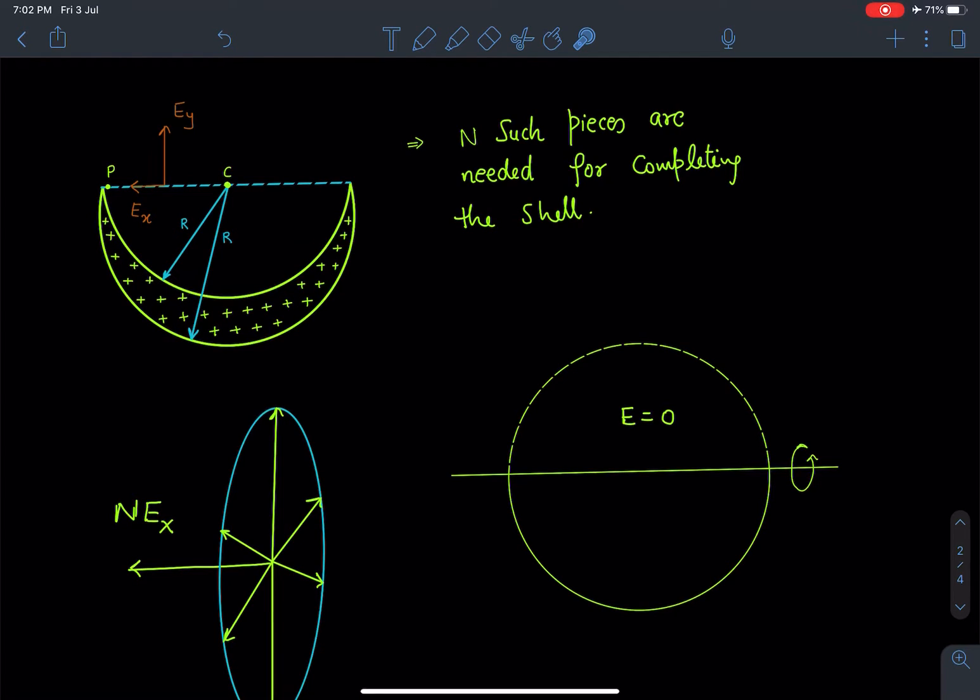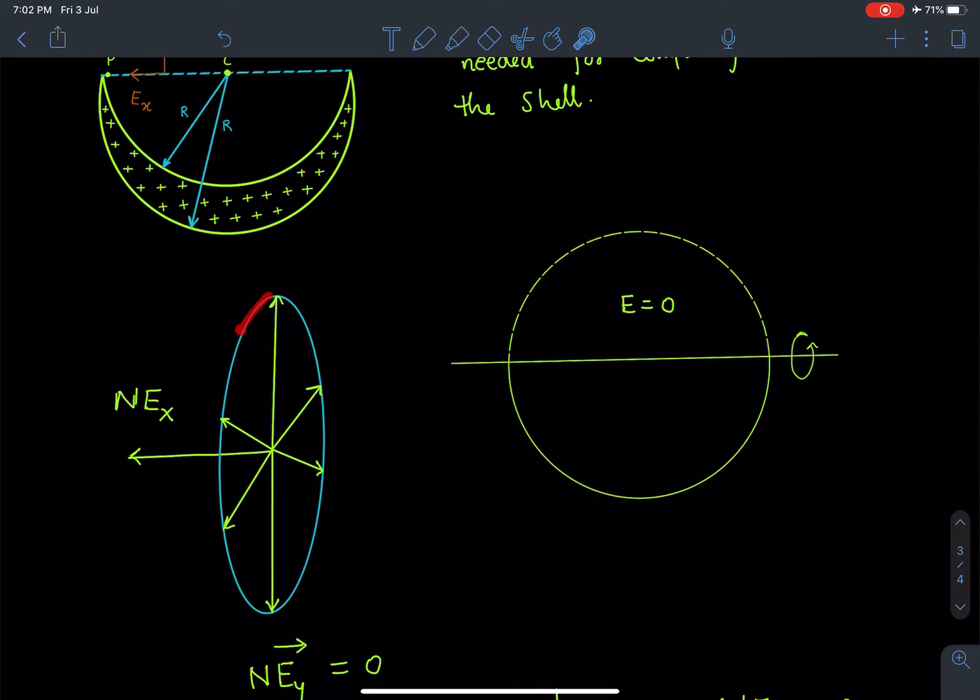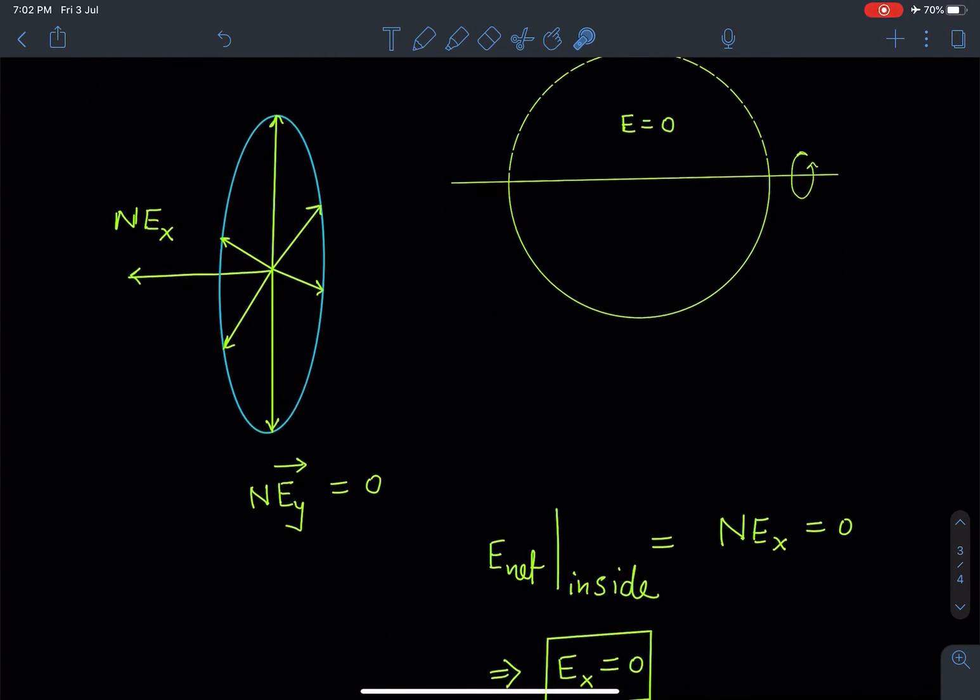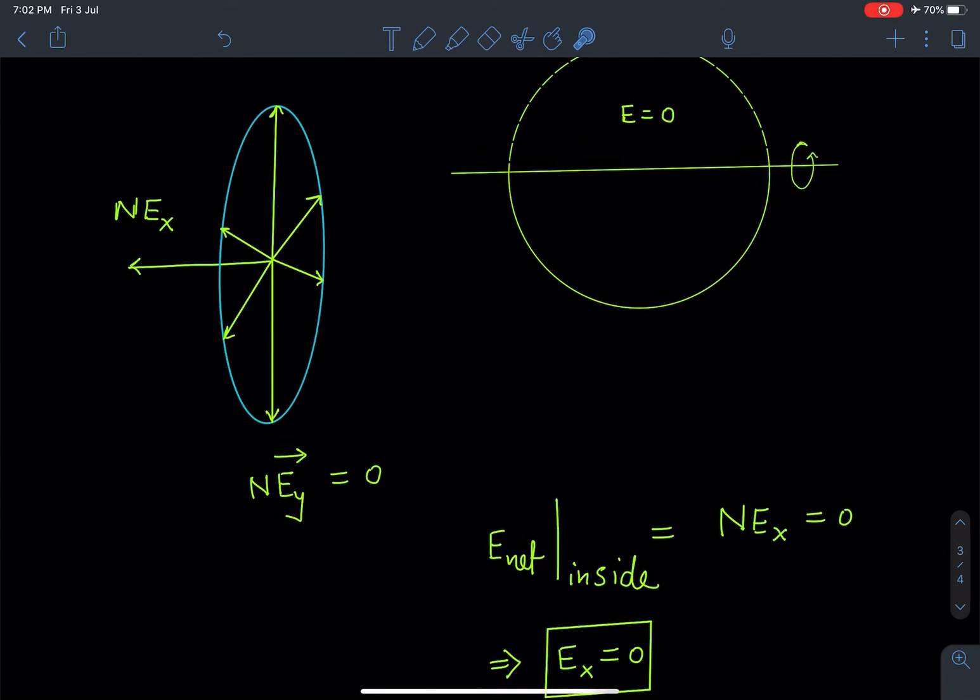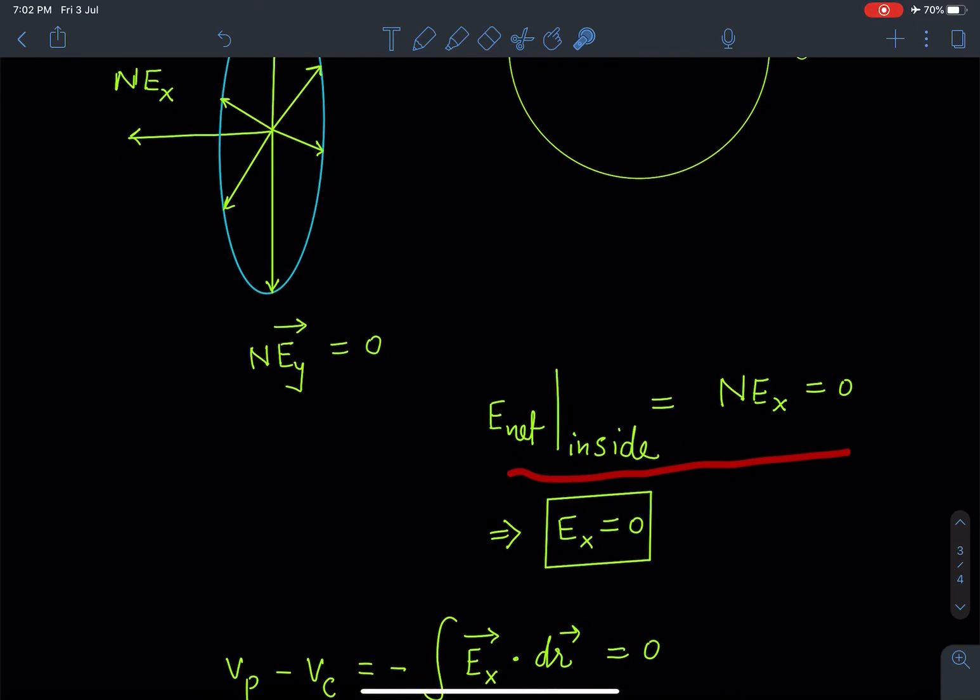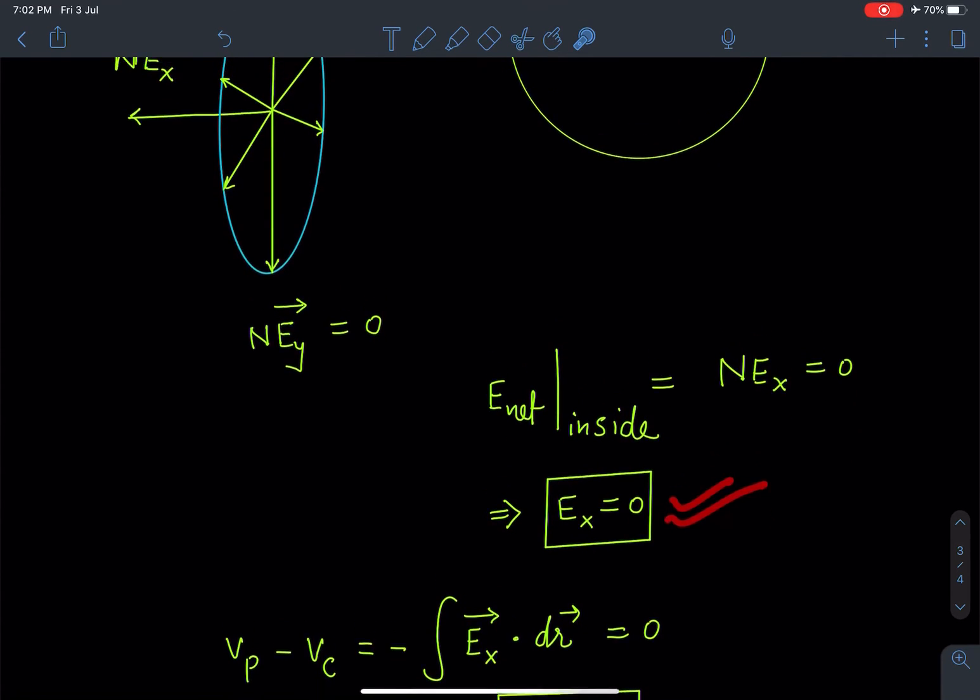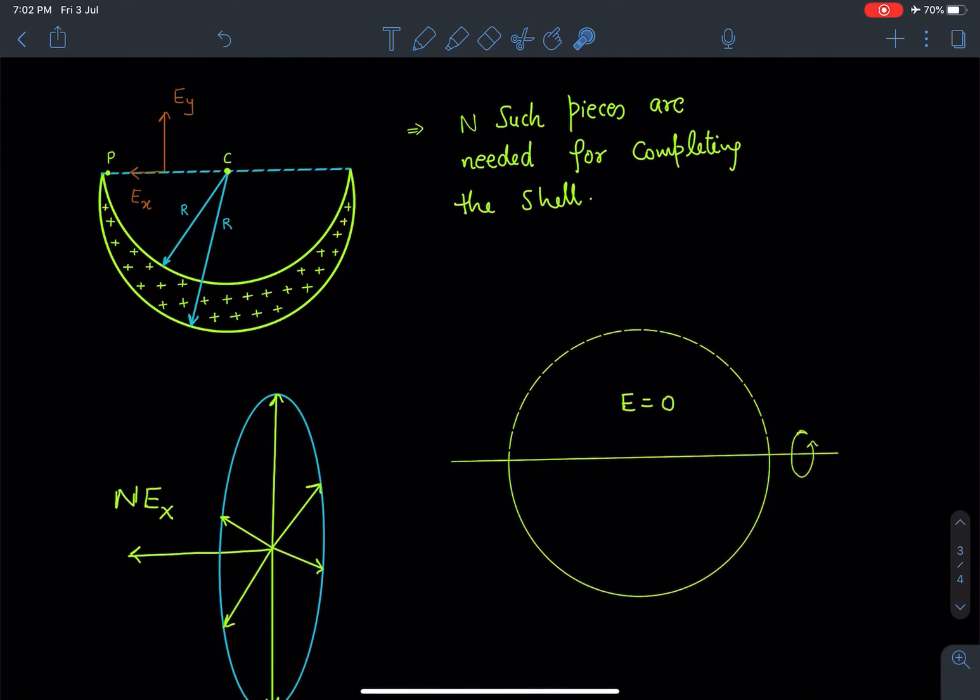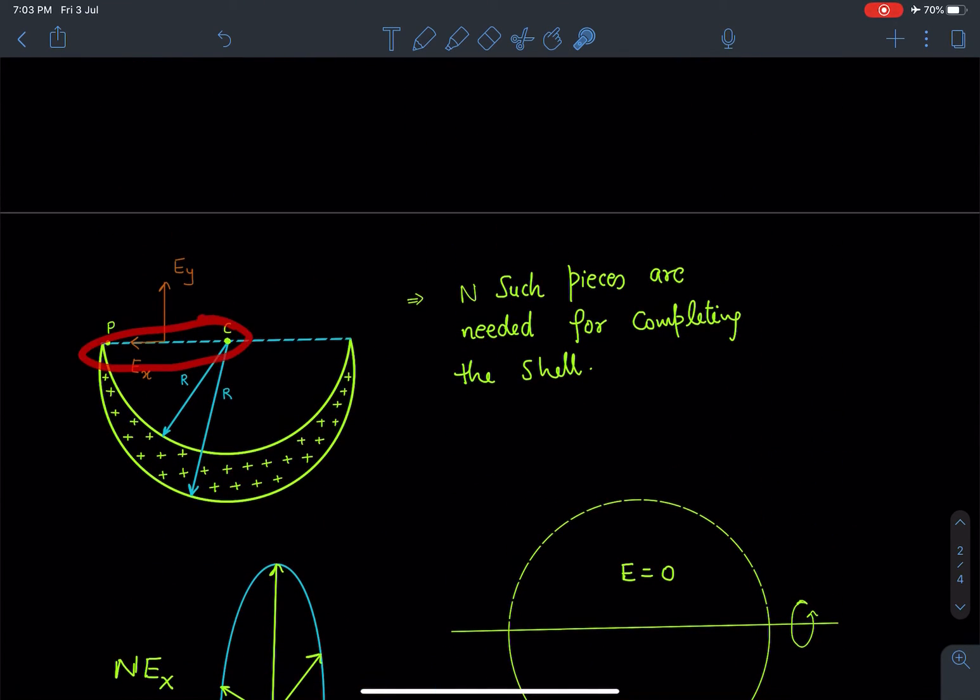Similarly, these Ey components are going to add and these are equally inclined vectors, so we can say this summation of n times vector Ey is going to give us zero because they are going to cancel out each other. Now the net field inside is going to be n times Ex, which is actually zero because it is a complete uniform shell. So from here we can say this Ex itself is zero. Now since we know that Ex is zero, the net field on this line PC is going to be along Y direction only.